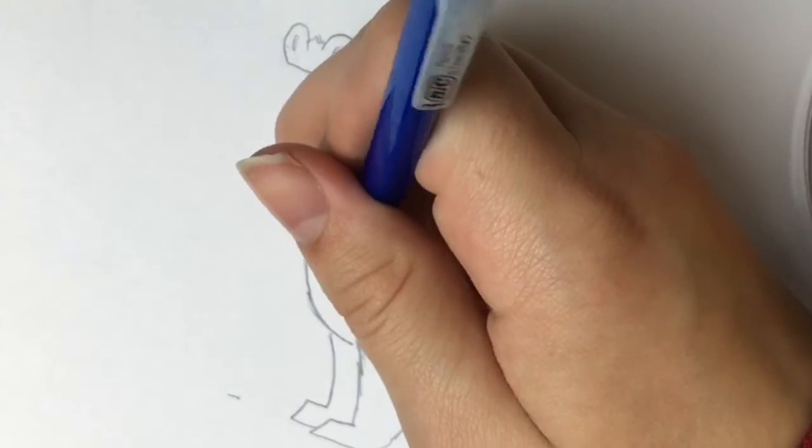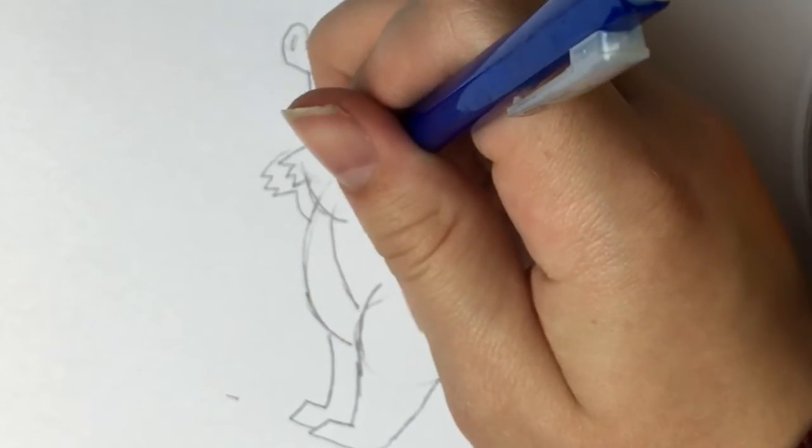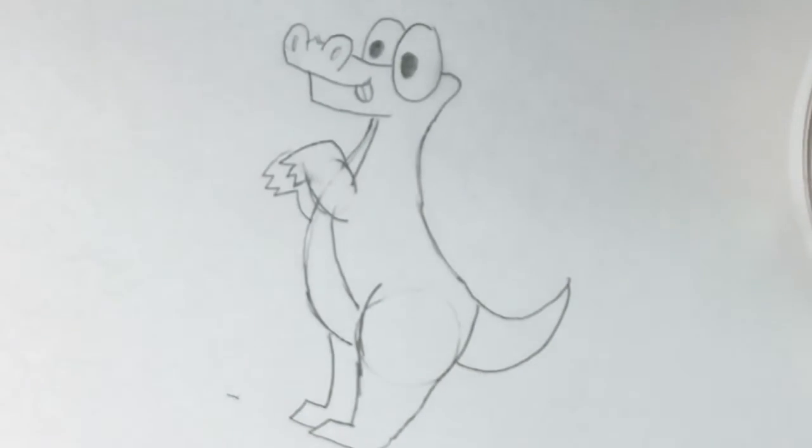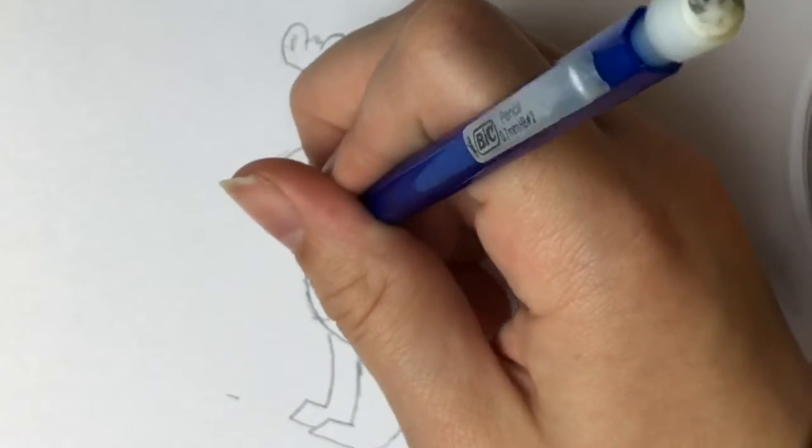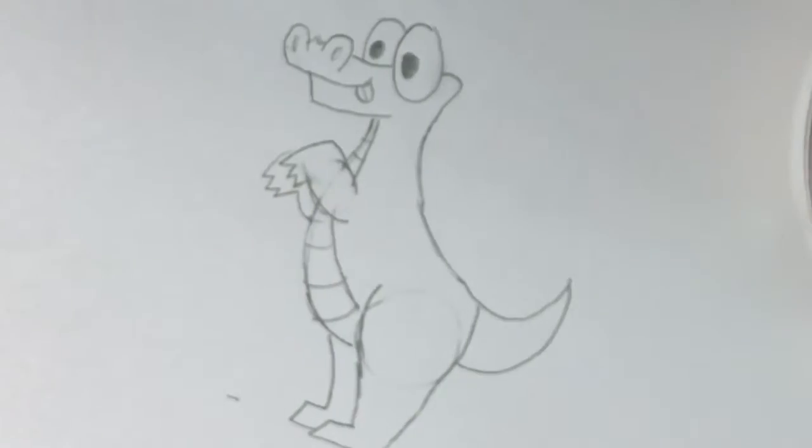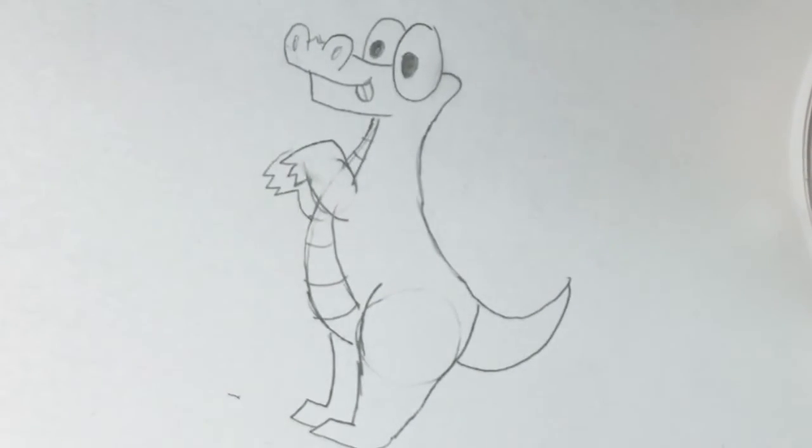If you want to add a little detail, draw a line along the edge of Joe's body on the inside of him. Then add lines from the original line to the second one. Now your Joe is done.